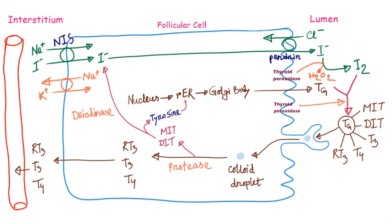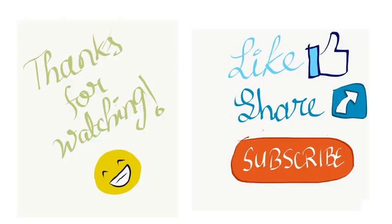Now let's summarize the steps of thyroid hormone synthesis. Number 1: Iodide trapping. Number 2: Synthesis of thyroglobulin molecule. Number 3: Oxidation of the iodide ion. Number 4: Organification and coupling. Number 5: Storage of the thyroglobulin. And Number 6: Release of the thyroid hormones. Thanks for watching, bye.